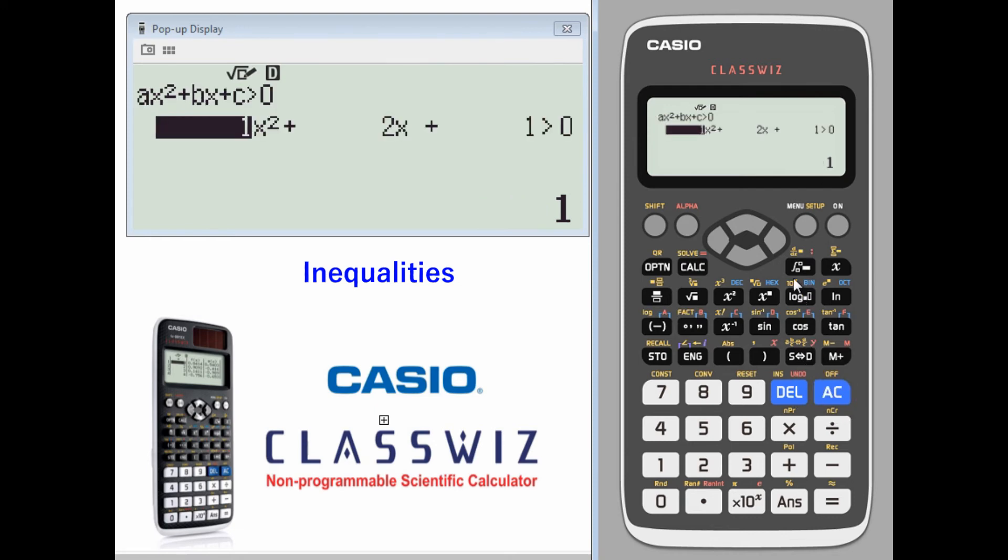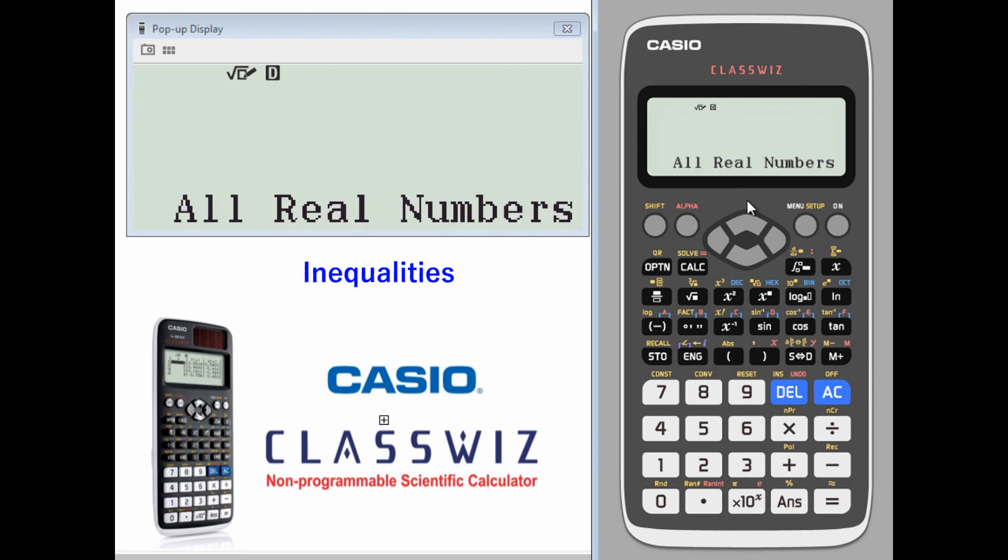Let's do it one more time. This time, we'll find one that has no solutions. We'll change that last constant to three, and see that we have all real numbers.